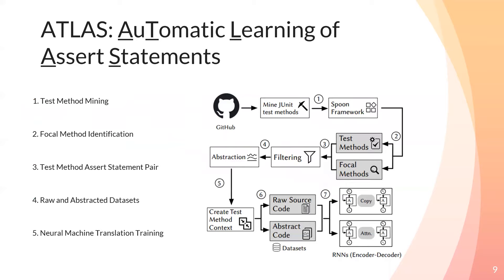This model is fundamental to our approach we call ATLAS, or Automatic Learning of Assert Statements. We want to highlight five major steps of our approach, beginning with test method mining. Here we extract all JUnit test methods from over 17,000 GitHub projects. Our next step is to identify the focal method that the test method is testing. We then generate test method assert statement pairs, which are used as input to our neural machine translation model. We generate a raw and abstracted dataset as part of our preprocessing technique, and finally subject our data to the neural machine translation model for training and evaluate its capability of generating meaningful assert statements.